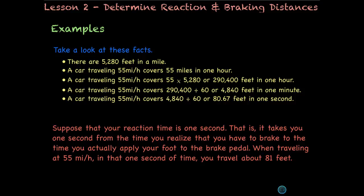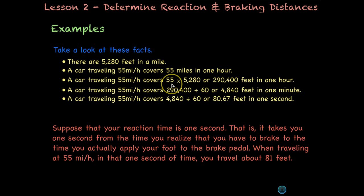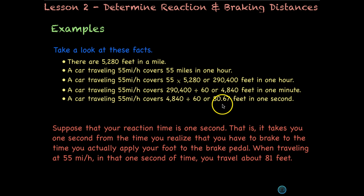Let's start with some facts. There are 5,280 feet in a mile. A car traveling 55 miles per hour will cover 55 times 5,280 feet, or 290,400 feet in one hour. We then divide by 60 to get feet per minute, and divide again by 60 to get feet per second — approximately 81 feet per second at 55 miles per hour.